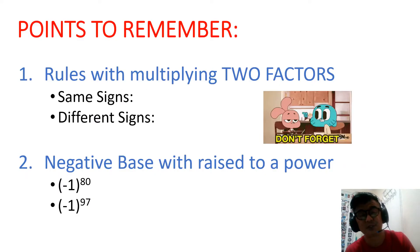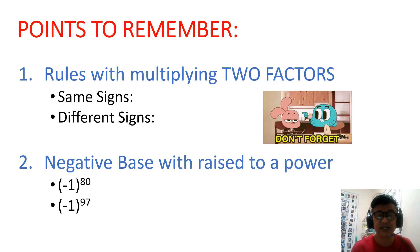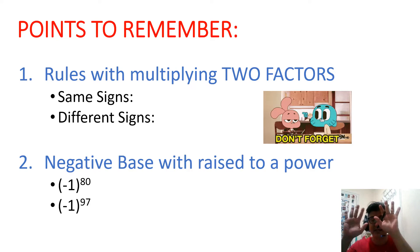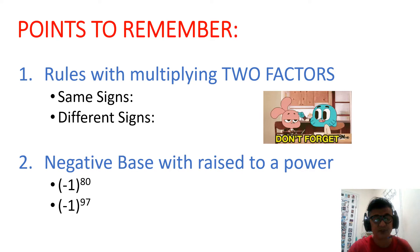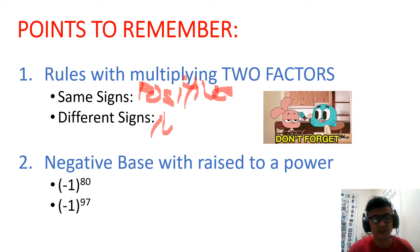Before we proceed to multiplication, we have four points to remember — lessons we've learned in the past. When multiplying two factors, look at my hands: same signs give a positive result. Different signs give a negative result. So to write it down: same signs will be positive — remember to multiply the absolute values first. Positive times positive is positive; negative times negative is positive. Different signs give negative.